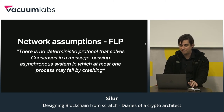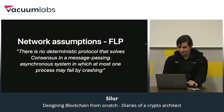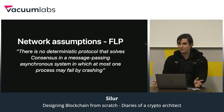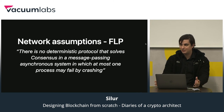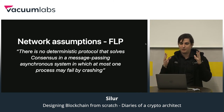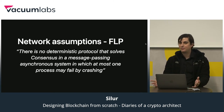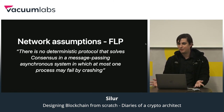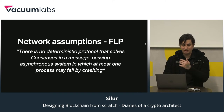An even more important network assumption is the FLP theorem: if you have an asynchronous network, you can't reach consensus in a deterministic way. If messages can be arbitrarily delayed — because the network is bad or players are intentionally going offline mid-protocol — you can't be absolutely sure consensus happened securely. Some blockchains claim to solve the FLP problem by offering hundreds of thousands of deterministic transactions per second on an async network — you shouldn't believe that either. You must choose whether to go for partial synchrony, full synchrony, or a non-deterministic probabilistic protocol.